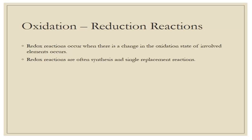Redox reactions happen when you have a change of oxidation state, and what that really means is you've got a transfer of electrons. These are the reactions that are oxidizing bridges and buildings, making them unsafe. These are the reactions causing erosion of architecture. They're the reactions that allow us to charge our cell phones and other devices — important reactions. Now these are usually, but not always, synthesis or single replacement reactions.